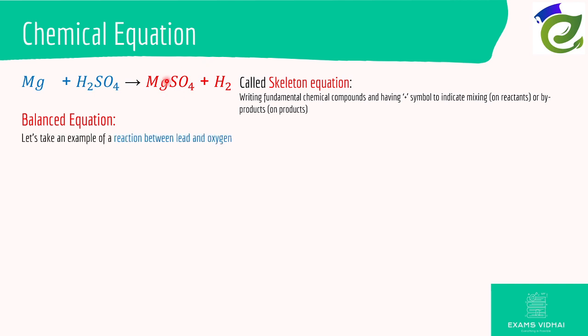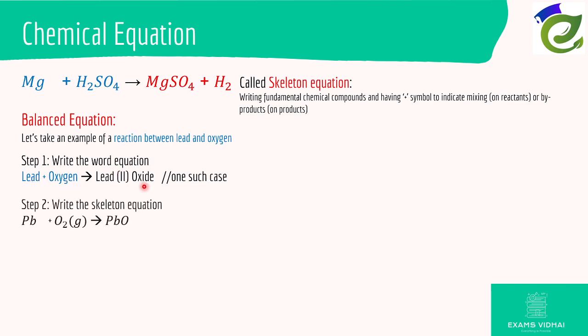Let's take an example between a reaction of lead and oxygen. First what we do is write the word equation to reduce confusion. Lead plus oxygen gives lead oxide, lead 2 oxide. At one particular temperature we get lead 2 oxide. Lead plus oxygen gives lead oxide, simple enough. The next step is we write the chemical equation in skeletal form. You write lead as Pb, that's the symbol, and oxygen as O2 and lead oxide will be PbO.